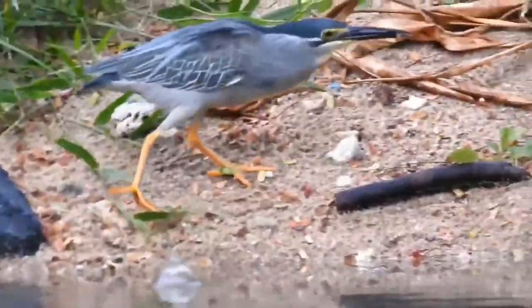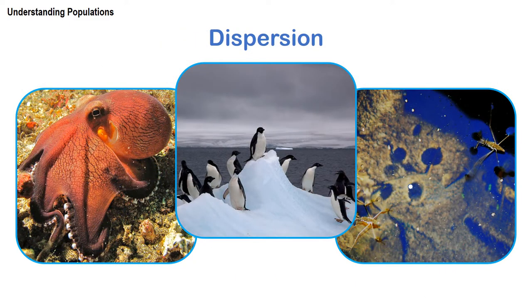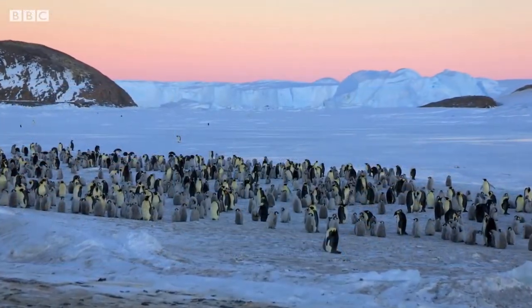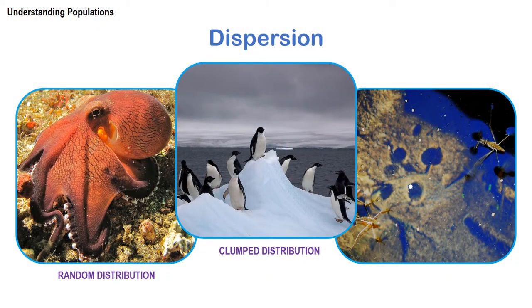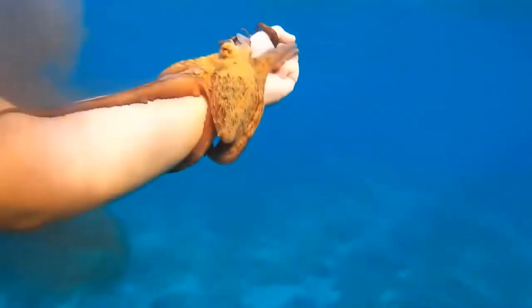Population density is always expressed as the number of individuals per unit volume or area. Without any knowledge about the area occupied, we can be easily misled by population size data alone. Dispersion can be categorized as clump — here the penguins try to cluster in small subgroups. Random distribution is usually characterized by organisms with no predictable territorial tendencies. The octopus, for example, has the ability to go to random places, so we cannot really detect any pattern as to its distribution.